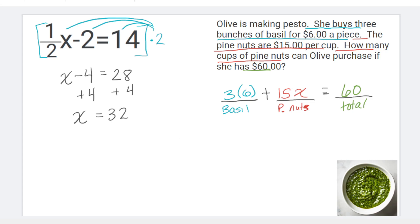So in my first blank, 3 times 6 is 18. Now I'm going to subtract the 18 from each side.